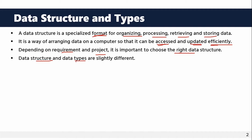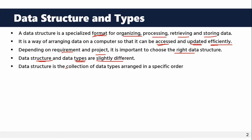In programming, data types include integer, float, character, double, etc. These data types are slightly different from data structures. A data structure is the collection of data types arranged in a specific order.